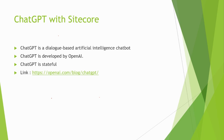Hello everybody, this is Surendra Sharma. Today we are going to see something really very cool — that's called ChatGPT with Sitecore. In the last few weeks, one of the best technologies people are talking about is ChatGPT. It's a dialogue-based artificial intelligence chatbot — basically, in one word, a chat-based tool that can answer your questions in a conversational way. It's developed by OpenAI, a very famous research lab.